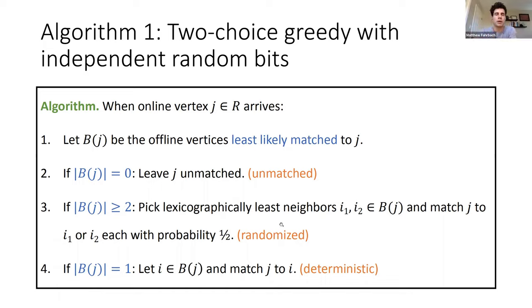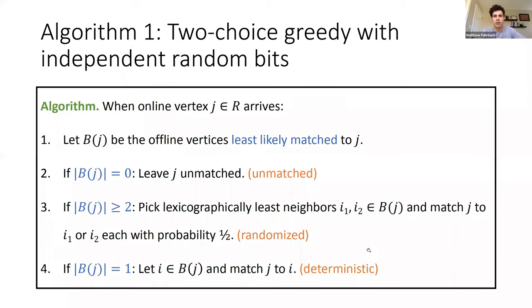If there are at least two candidates, we take the two top candidates — lexicographically to keep it simple — flip a coin, and make the assignment regardless of previous decisions. If there's only one candidate, it's essentially deterministic. The algorithm never fully realizes its past decisions; it always operates in an expected state. What it stores for each offline vertex is the probability that the vertex has been matched given previous decisions.